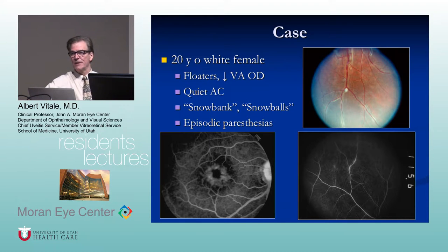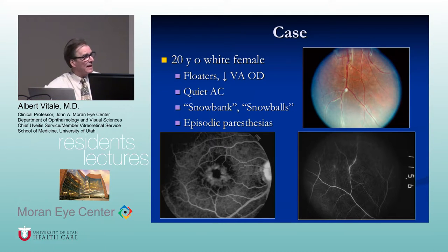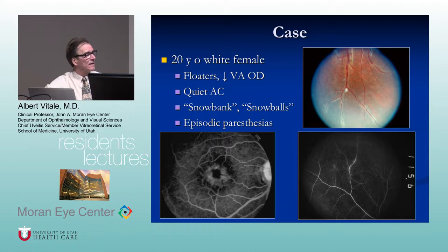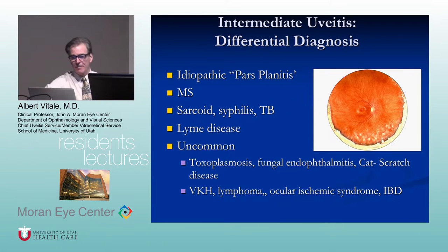Intermediate uveitis associated with multiple sclerosis characteristically shows peripheral vasculitis. The fluorescein angiogram shows this more distinctly, particularly with wide-field fluorescein angiography. Macular edema is a common accompaniment.